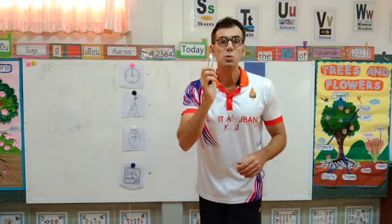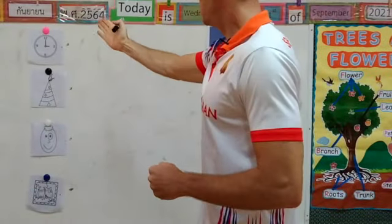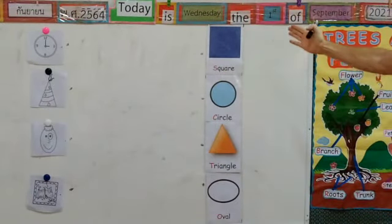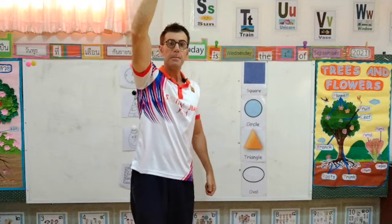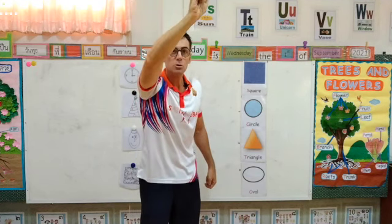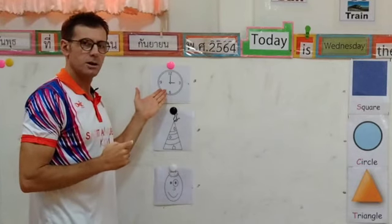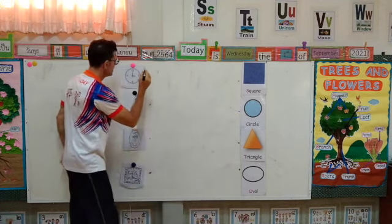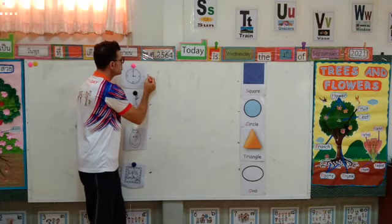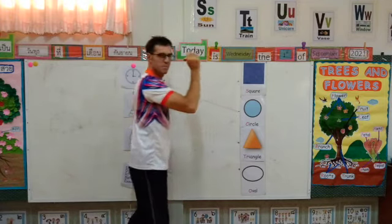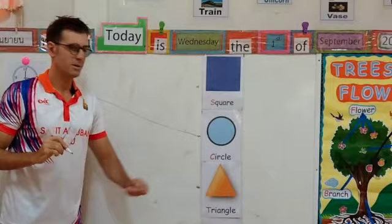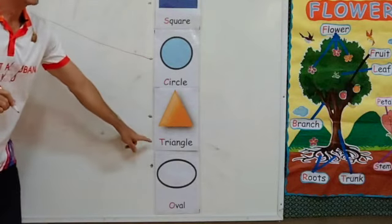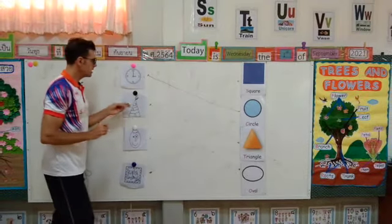Now I want to match the object with its proper shape. Make a line like this. Clock — clock is circle. Yes, let's connect. Circle. Head is, yes, triangle. Let's connect.